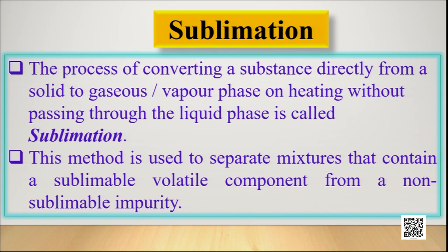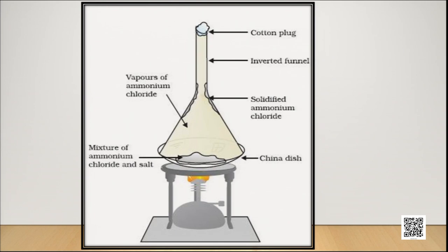Sublimation is the process of converting a substance directly from a solid to a gaseous or vapor phase on heating, without passing through the liquid phase. This method is used to separate mixtures that contain a sublimable volatile component from a non-sublimable impurity. Salt is non-sublimable while camphor is sublimable. Other examples of sublimable solids include ammonium chloride, iodine, naphthalene, and anthracene.